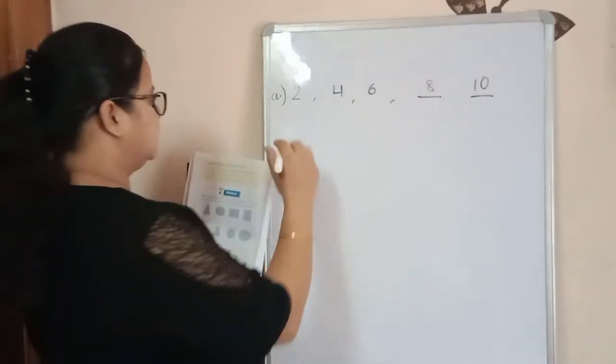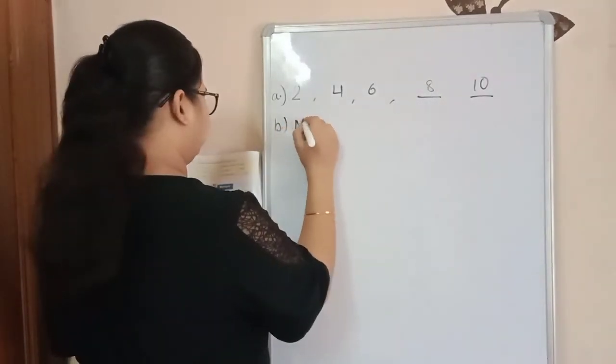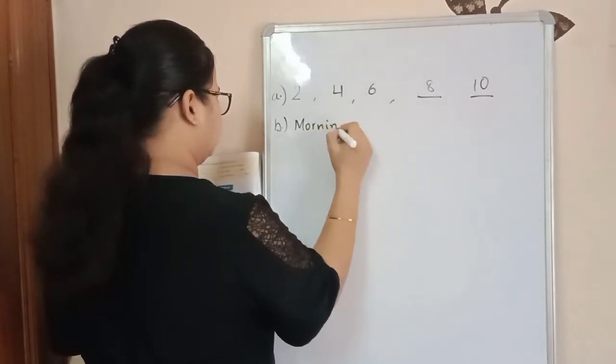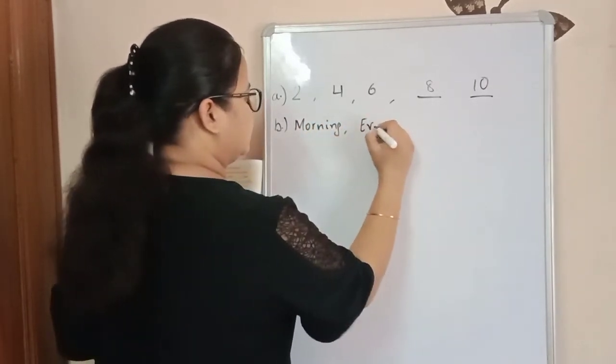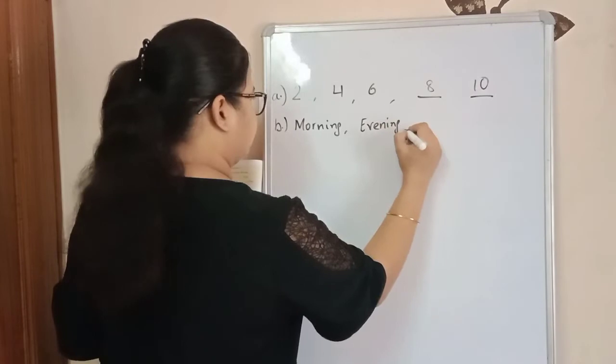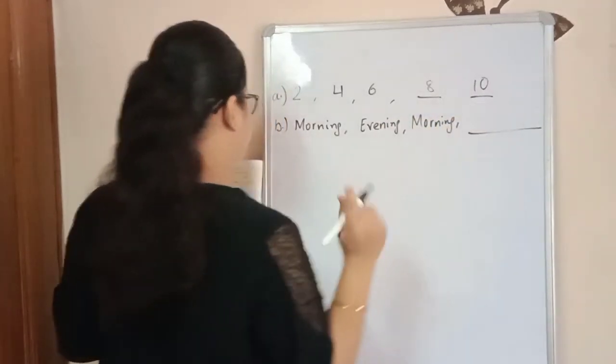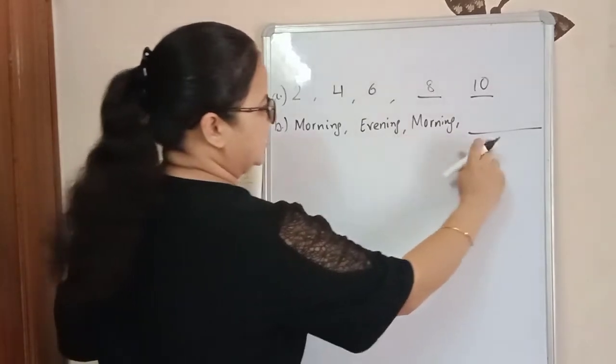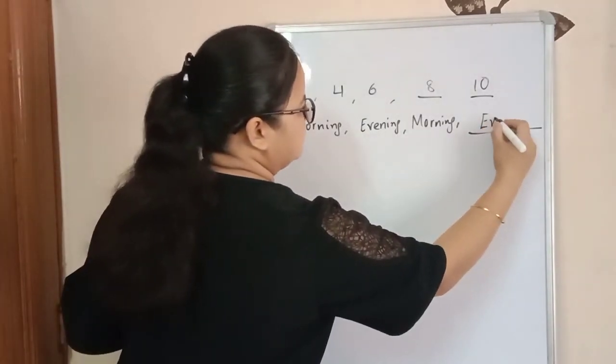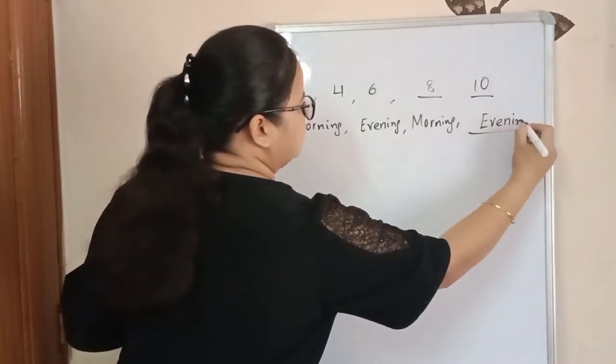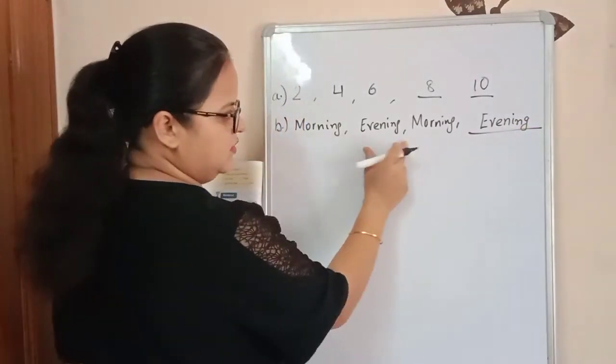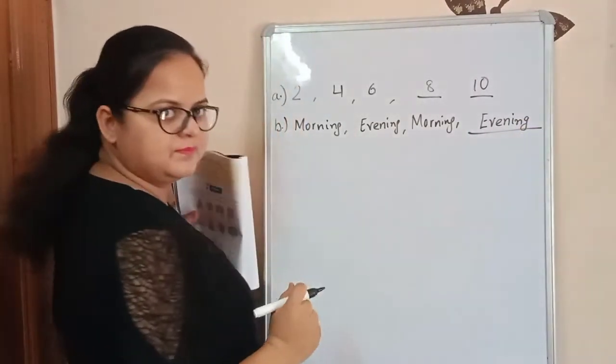The next is morning, evening, morning, and then a blank. Morning, evening, morning, evening. Here we will write evening. Morning, evening, morning, evening. Done.